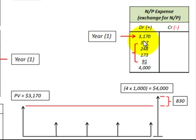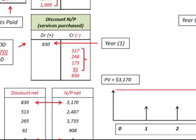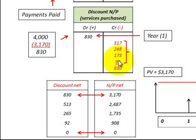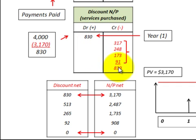We need a balancing entry for the interest expense that we recognize, and we do that in our discount to notes payable. That interest expense reduces the discount to notes payable by crediting it each year. At the end of the four years, we have a zero balance in our discount to notes payable — the $830 less the $830 gives us a zero balance.